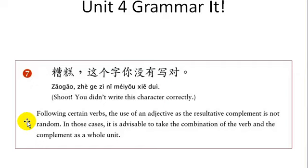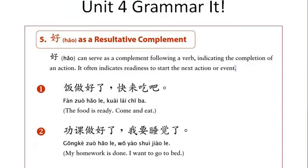Following certain verbs, the use of an adjective as a resultative complement is not random; it is advisable to take the combination of verb and complement as a whole unit. 好 can serve as a complement following a verb, indicating the completion of an action and often readiness to start the next action. For example: the food is ready — we finished cooking, quickly come and eat.